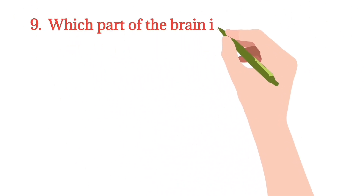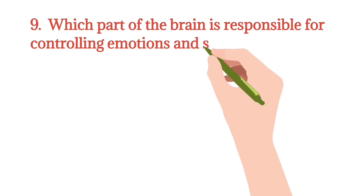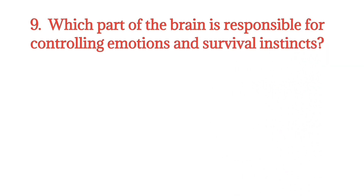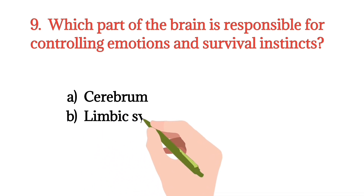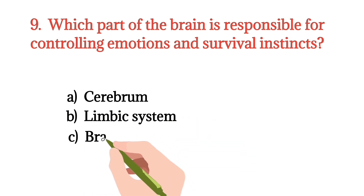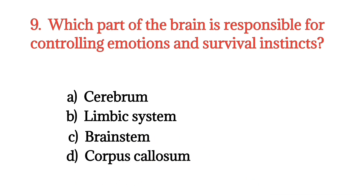MCQ number 9. Which part of the brain is responsible for controlling emotion and survival instincts? Option A: Cerebrum. Option B: Limbic system. Option C: Brainstem. Option D: Corpus callosum. The right option is Option B.